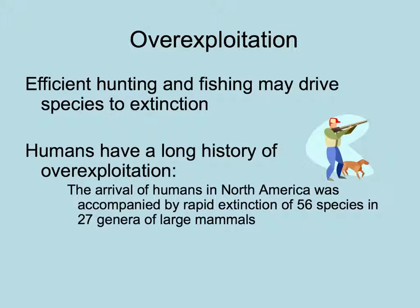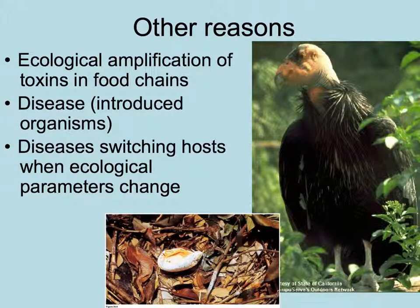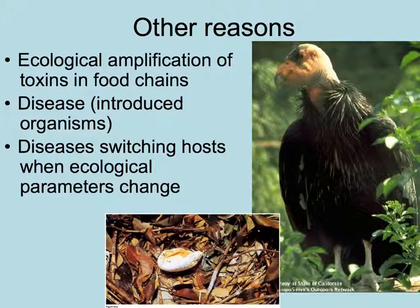It's shameful how many species were driven to extinction by overhunting and overuse. The arrival of humans in North America was accompanied by the rapid extinction of 56 species in 27 genera of large mammals. Other anthropogenic reasons for extinction include introducing toxins into the food chain, like the overuse of DDT to control pests on crops. All other wildlife was affected — insects, birds, and top predators suffered as toxins accumulated in their systems and made them unable to reproduce, like the California condors whose eggs collapsed.